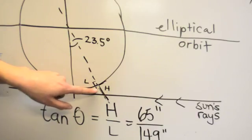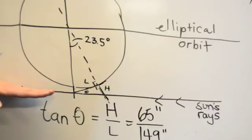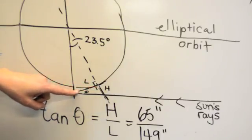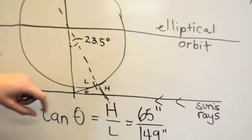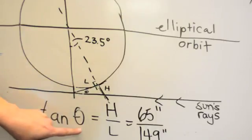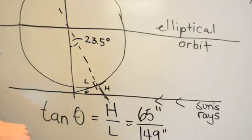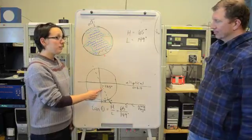Here's where I am, standing at the South Pole, and that's my height. The sun's rays are perpendicular to this elliptical orbit, and that created a shadow here. Using trigonometry, we know that this angle is the same as this angle. We can solve this angle by taking the tangent of this angle, which is my height divided by the length of my shadow. My height was 65 inches, and my shadow was 149 inches.